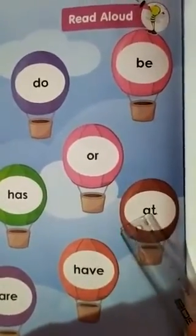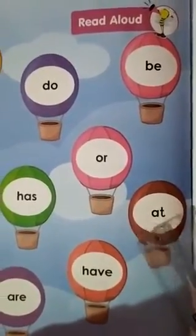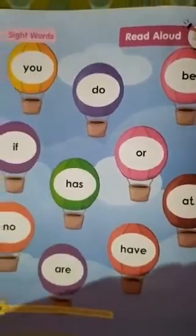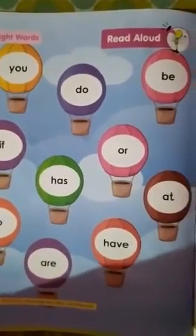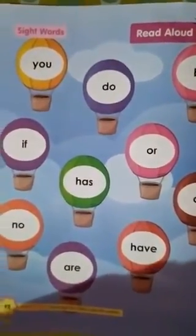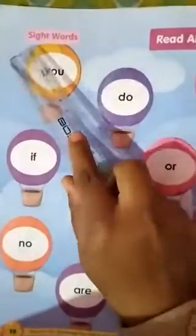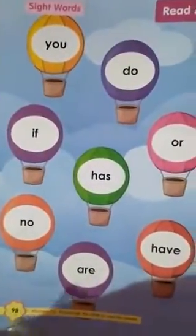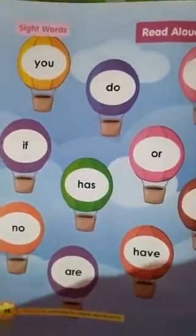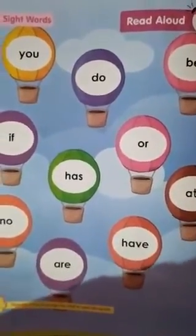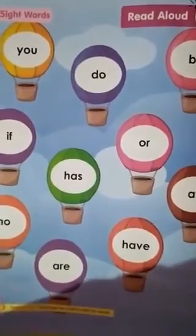And A-T — At. So children, in this way you all have to do the reading practice of sight words page number 98 in your English Letter Delight A book. Thank you.